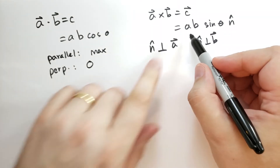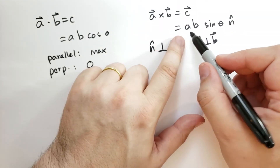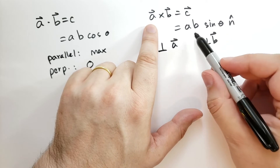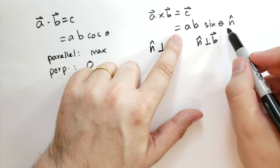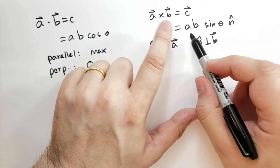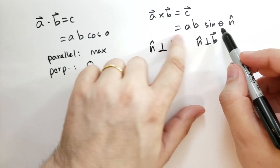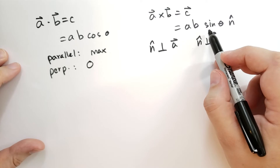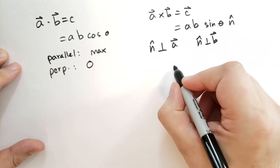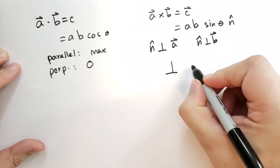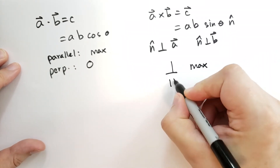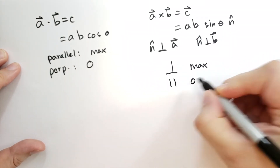A cross B doubles if you double one of the vectors, or halves if you halve one of the vectors. The angle theta used by sine means that when the vectors are perpendicular the cross product is maximized, and when they're parallel it's 0.